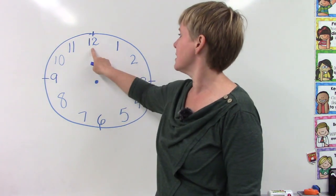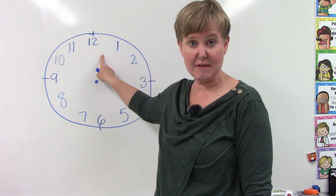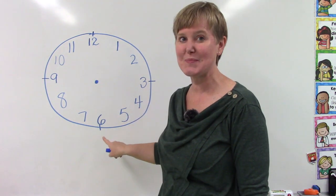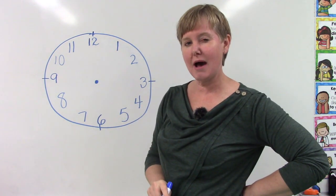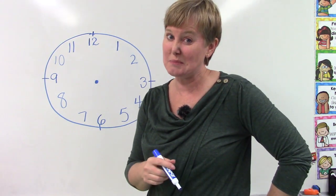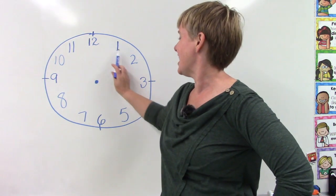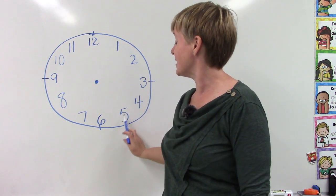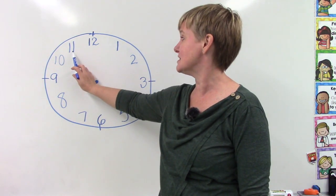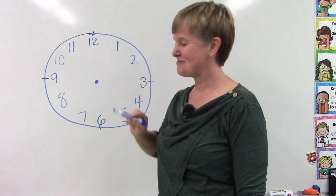When the minute hand goes around the clock, we can tell that 5 minutes has passed as it passes each number. Let's count by 5 again, but this time why don't we sing the skip counting by 5 song. Are you ready? 5, 10, 15, 20, 25, 30, 35, 40, 45, 50, 55, 60. Well done.